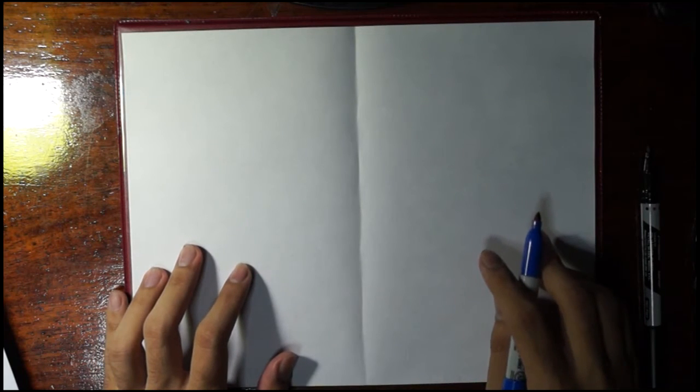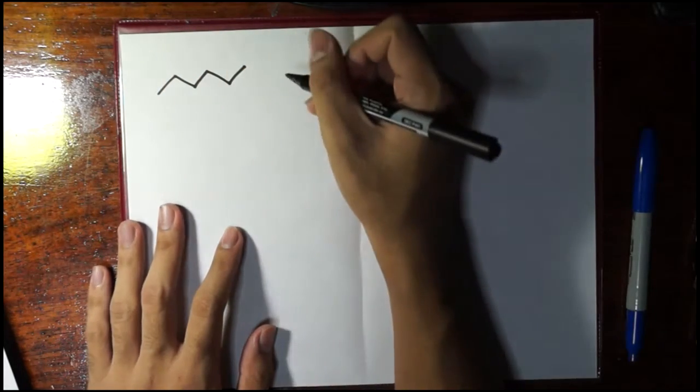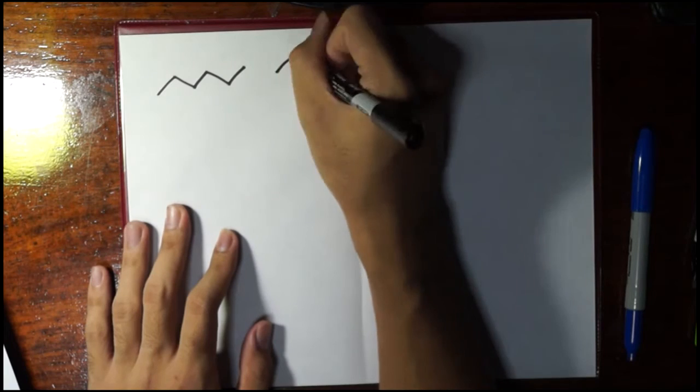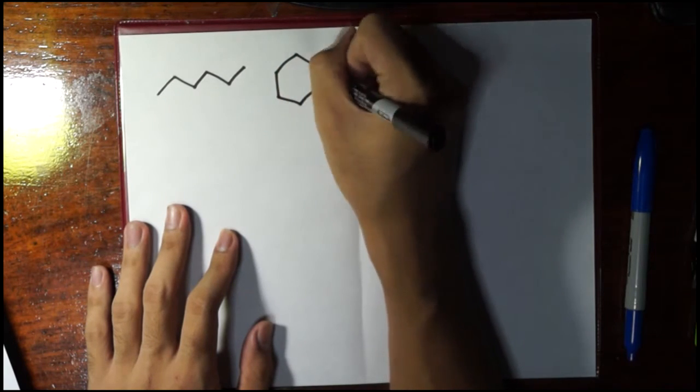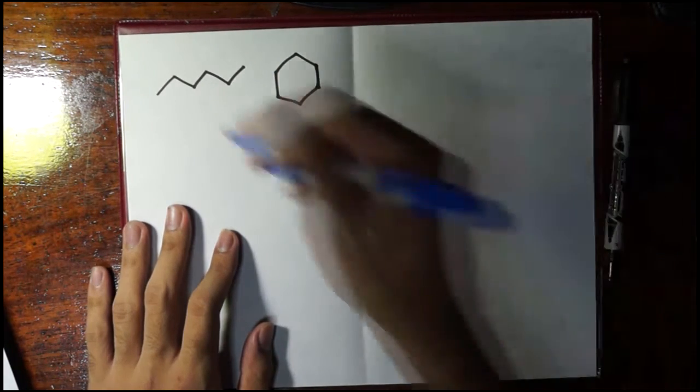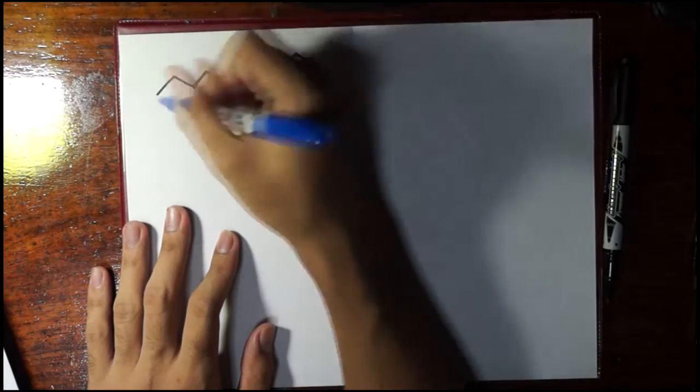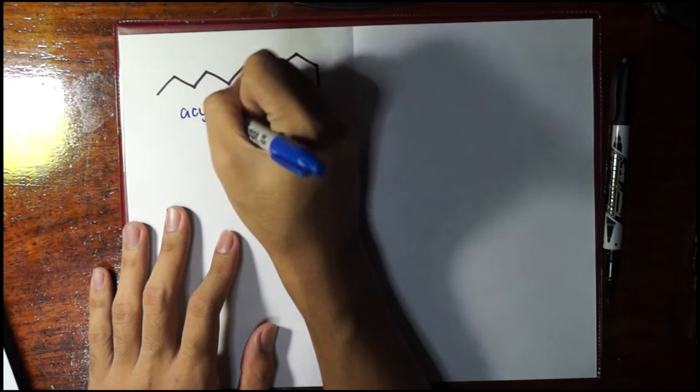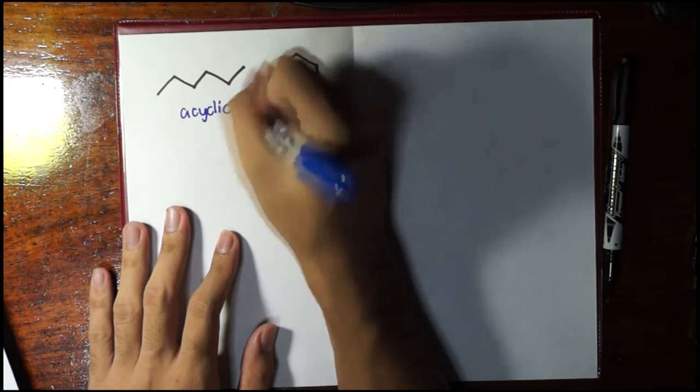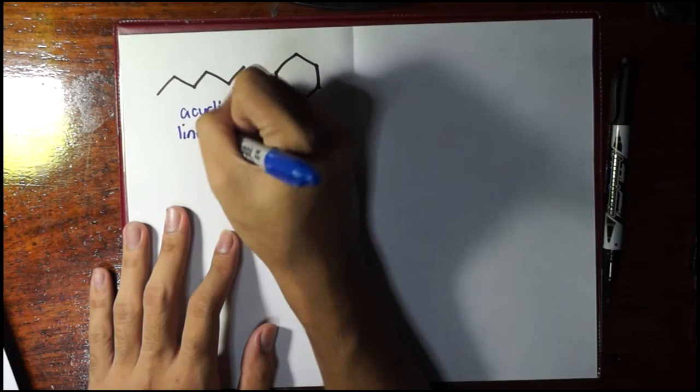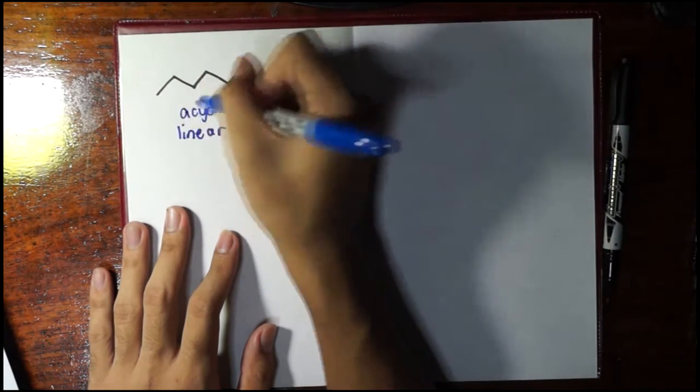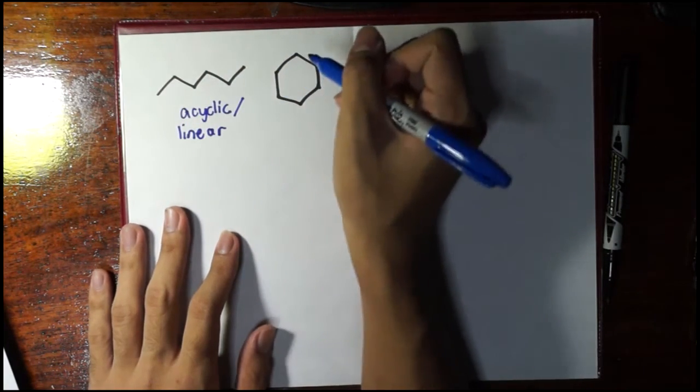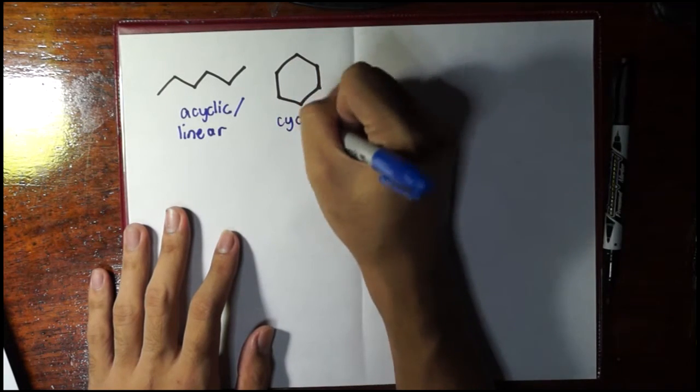So first would be the ring closure, because there are some compounds which are either drawn like this, as in a line, and some are drawn like this, meaning they form a ring. So if we have something like this, we call this acyclic, or we can just call this linear most of the time, although acyclic is a more general, more let's say accurate term, and this one is of course cyclic.